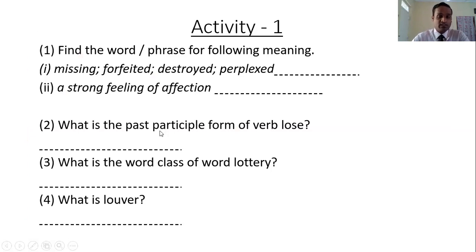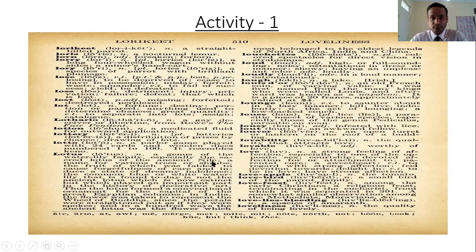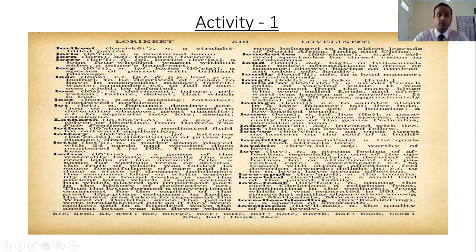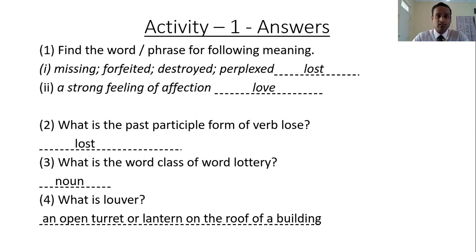Fourth question: what is 'louvre'? The word is given and the question asks for the definition or meaning of the word 'louvre'. You have to find the word 'louvre' in the dictionary page. Here it is: l-o-u-v-r-e, 'louvre'. The meaning is 'an open turret or lantern on the roof of a building'. So that phrase is the answer — the meaning of the word 'louvre'. Here are the answers for the activity — you can pause the video and check your answers.